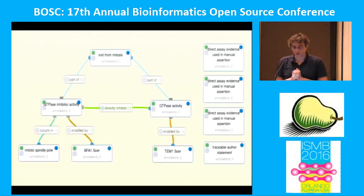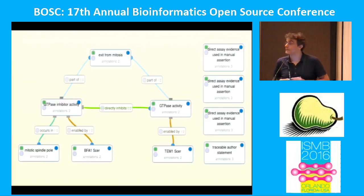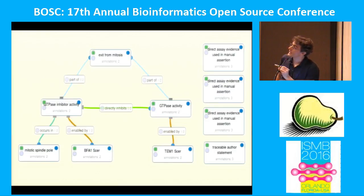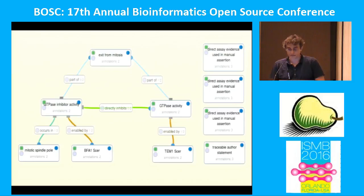I want to pause here and expand out so you can see the parts. Earlier I was mentioning enabled by BFA1 — this is just all nodes and edges under the hood. GTPase activity enabled by TEM1, GTPase activity part of exit from mitosis. Using the Noctua tool, we have a general graph editor as well as something to help curators do more complicated things. Along the right side, you can also see that we are modeling our evidence using ontologies now as well.